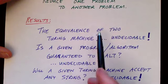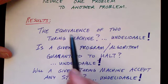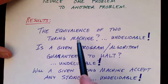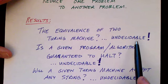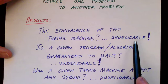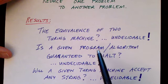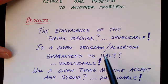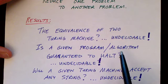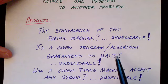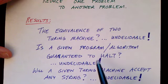Consider two Turing machines — do they do the same thing? That is, are they equivalent? Do they accept the same language? This turns out to be undecidable, and in this series of videos we'll show the proof for that. How about a program — does it always halt? Is a particular program guaranteed to halt? Does a particular algorithm always stop, or might it sometimes loop forever? That's an important question to ask if you're a programmer, but it turns out that that problem is, in general, undecidable.